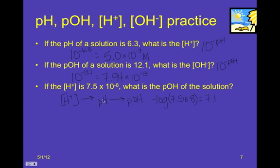And then, to go from pH to pOH, you take 14 minus the 7.1. And so, the pOH is going to be 6.9.